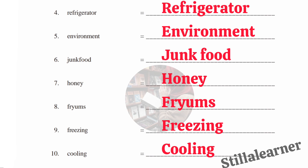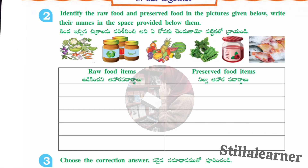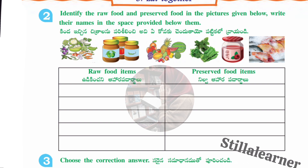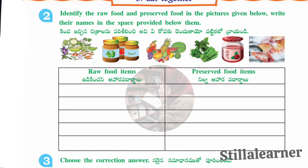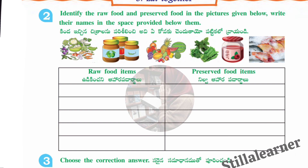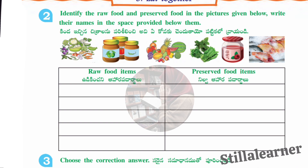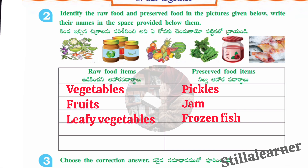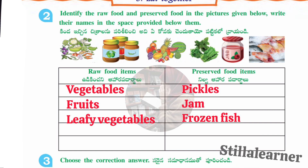The second section asks you to identify raw food and preserved food from the pictures and write them in a table with two columns. Raw food items: vegetables, fruits, leafy vegetables. Preserved food items: pickles, jam, frozen fish. If you don't understand, please pause the video and write it down.